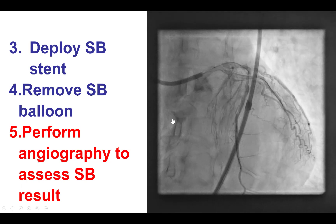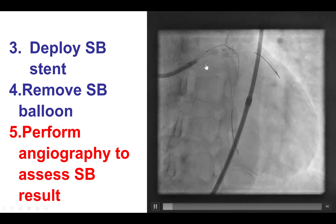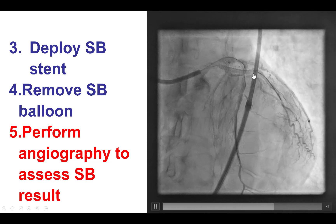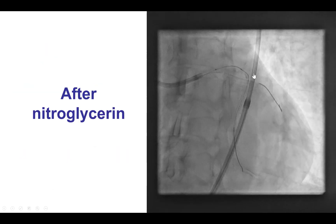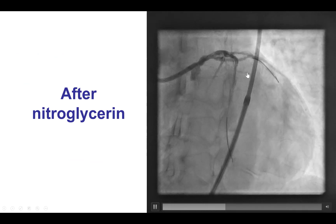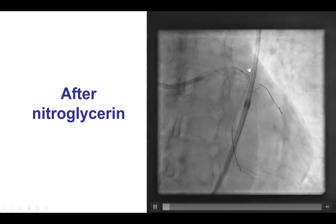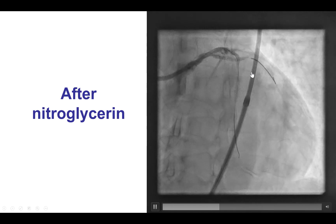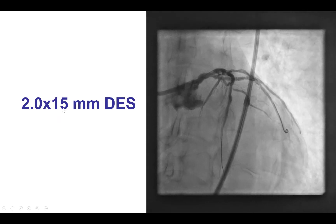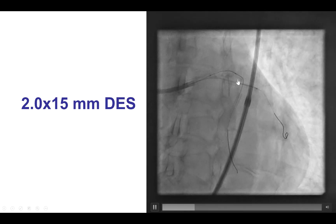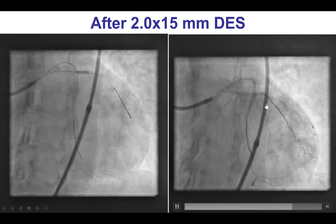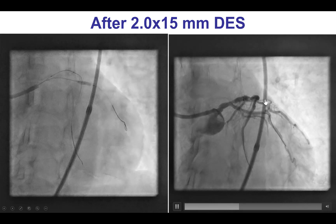Before crushing the side branch stent it is important to make sure the result is adequate. There was something at the distal edge of the stent that was of concern. We gave nitroglycerin to see if it was spasm, but there remained a lesion, which likely represented a distal edge dissection. Therefore, we decided to cover it and placed a small 2.0 by 15 mm drug-eluting stent that successfully covered the lesion, providing a nice result into the circumflex.